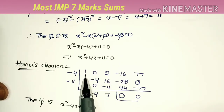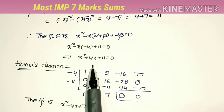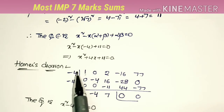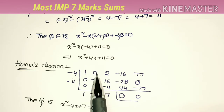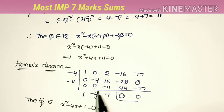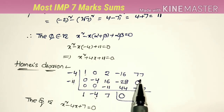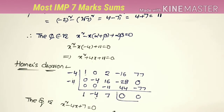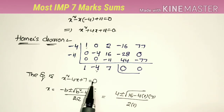Now performing Horner's division with the coefficients 1, 0, 2, -16, 77, using +4 and -11. Step by step: 1; 1×(-4)=-4; 0-4=-4; (-4)×(-4)=16; 1×(-11)=-11; adding gives 7; 7×(-4)=-28; (-4)×(-11)=44; adding gives 0; confirming the remainder is zero. The resulting quadratic is x² - 4x + 7 = 0.